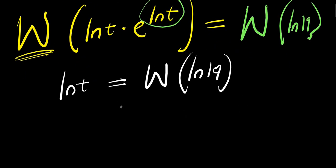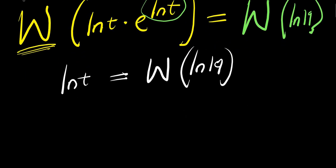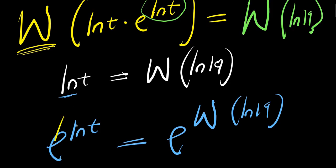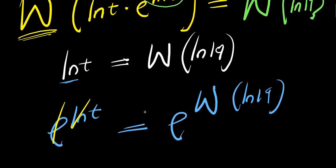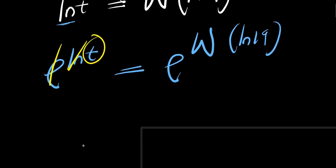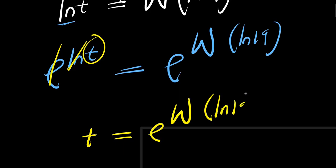From here we solve for t. To eliminate the ln, we raise both sides as exponents of e. Using the identity that e to the power of ln t equals t, we get t equals e to the power of W of ln 19. This is the solution to the problem and will give us a precise answer.